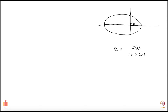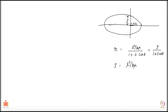So rho is L squared over k·mu. I will rewrite the orbit equation as r equals rho over 1 plus epsilon cos theta. The numerator rho is the distance from the origin at theta equals pi over 2. However, this is not yet the best way to write the equation. Anyway, let us ask about R minimum.